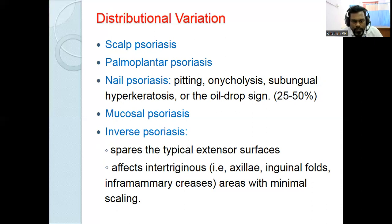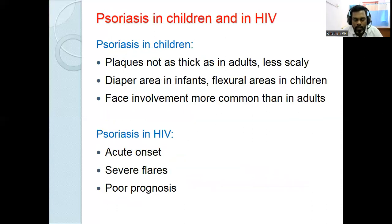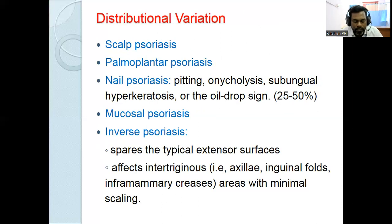Inverse psoriasis or flexural psoriasis affects only flexural areas — mainly axilla, inguinal folds, and inframammary creases — and spares the typical extensor aspects of extremities, elbows, knees, and lumbosacral region. The differential diagnosis for inverse psoriasis includes candidal intertrigo and intertrigo over the groin.